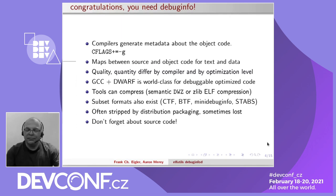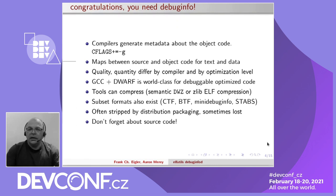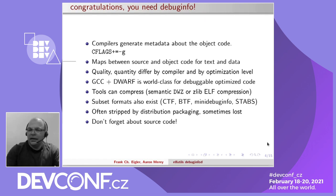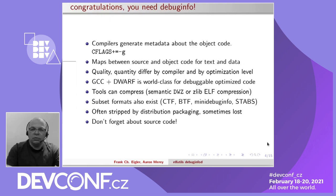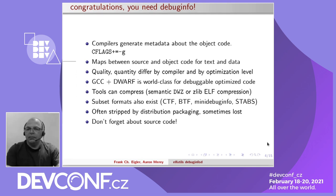This is what lets a debugger know where to find variables at runtime. The quality of the debugging data varies a great deal by compiler. You want as high fidelity as possible so that you can debug even highly optimized, deployed binaries — not just toy stuff compiled with -g and nothing else. You need a good quality compiler to give you good quality debug info. The world class for now, as far as I'm aware, is good old GCC, which does an excellent job of emitting debugging data for even fully optimized code.